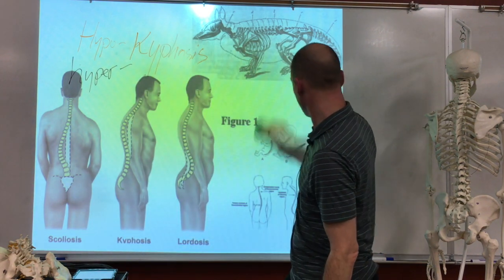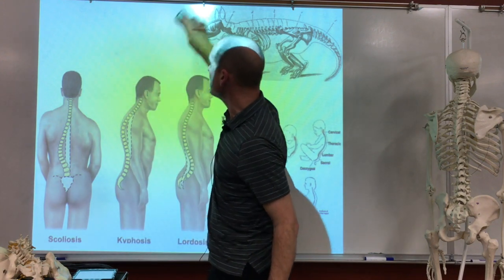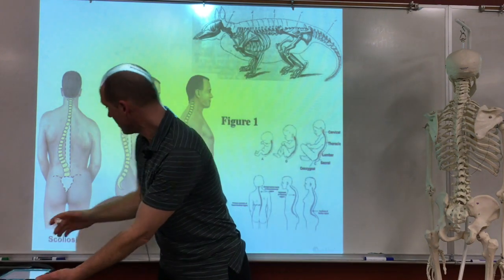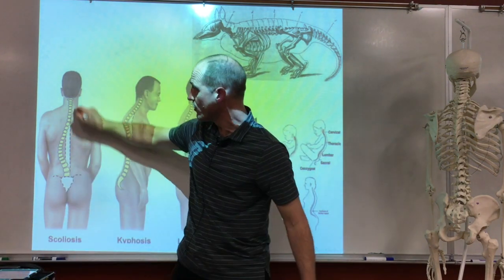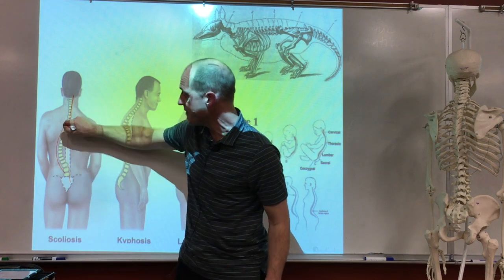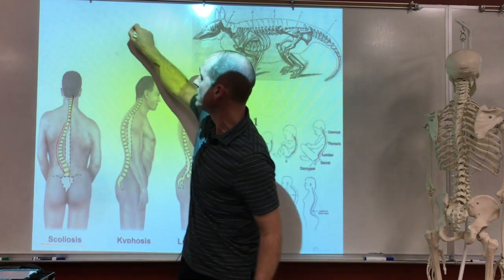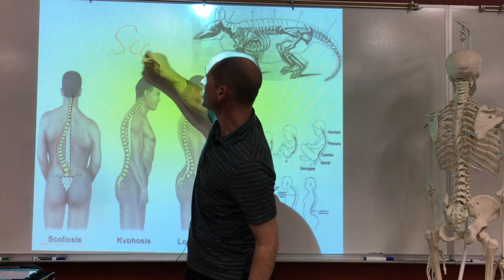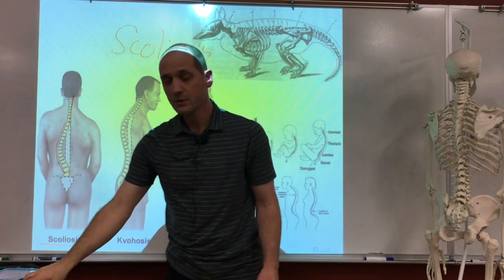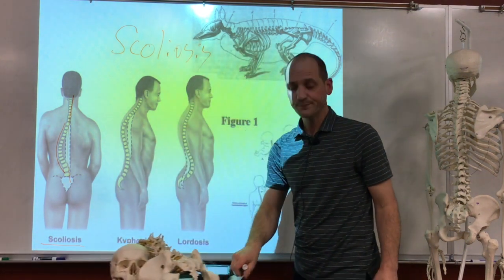I described the side bending already briefly. If you look from the back and you want it straight but you don't have it straight, we call that a scoliosis. That's the term for that.